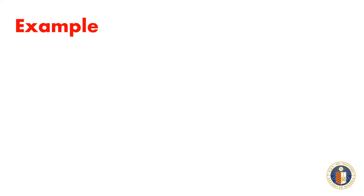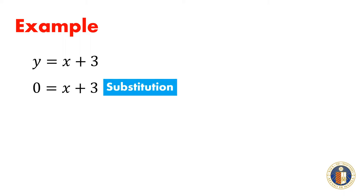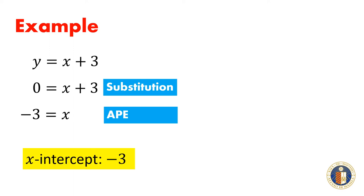It is the value of x when y is equal to 0 in a linear equation. Suppose we want to find the x-intercept of the equation y equals x plus 3. We substitute 0 for y and solve for x using the addition property of equality. We get the x-intercept to be negative 3.